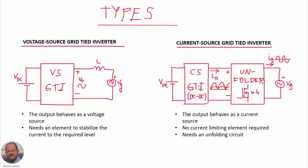The other type is the current source grid-type inverter. In this case, the inverter behaves like a current source at the output, so we can modulate the current to have a sinusoidal waveform and inject it into the grid. The inverter is in reality a DC-DC converter in which we modulate a control parameter to obtain the correct sinusoidal waveform. We need an unfolding circuit, usually a full bridge made with four transistors, to inject a sinusoidal current into the grid. In this case, we don't need a current-limiting element, but we do need the unfolding circuit.